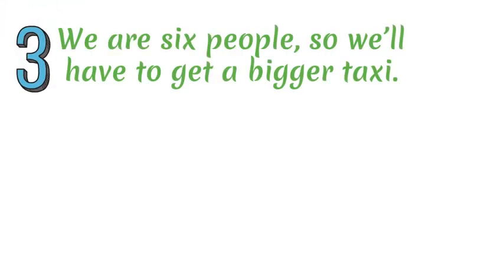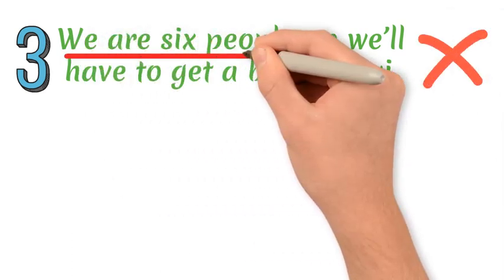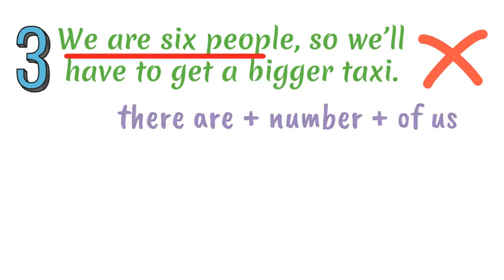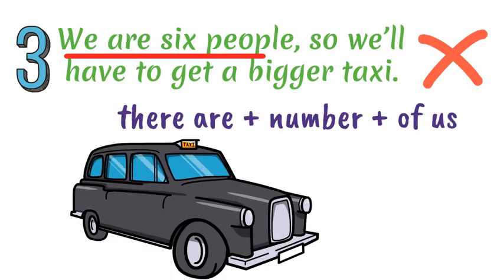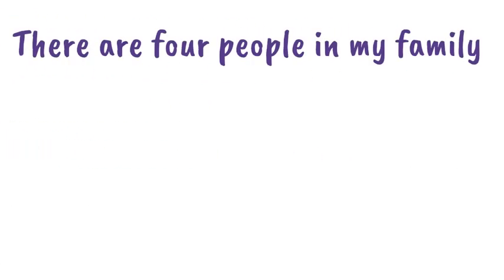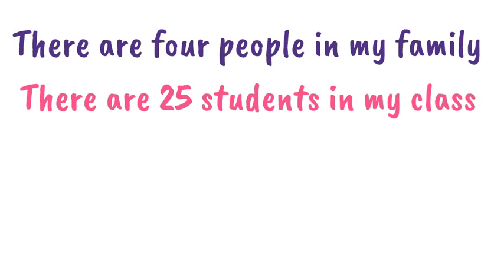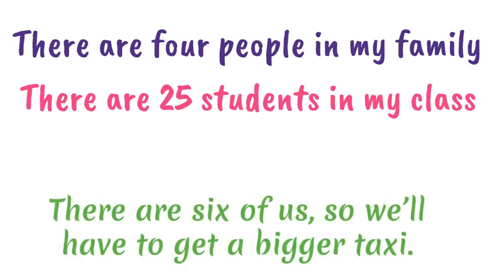Mistake number three. When we talk about the number of people that are in a group, we use 'there are' plus the number plus 'of us' if the person speaking is in the group, or 'there are' plus the number plus 'of them' if the person speaking is not in the group. If you use words like 'people', 'students', or 'workers', you don't use 'of us' or 'of them'. For example: 'There are six of us, so we'll have to get a bigger taxi.'